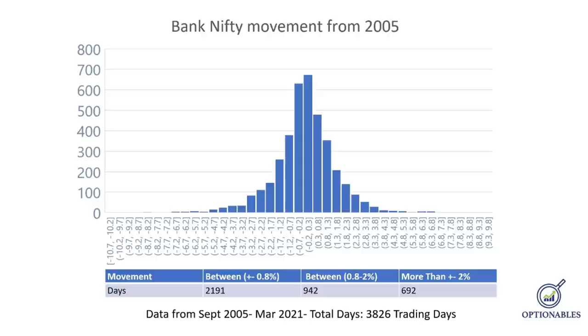We're going to build a strategy such that 2 out of 3 scenarios give us profit. Obviously we can't profit from all three scenarios — if that were possible, no one would ever make a loss. So we'll choose range-bound and highly trending — together that's around 70% probability of making profit. Markets are more or less likely to remain range-bound, and that's the exact reason we chose short straddle.